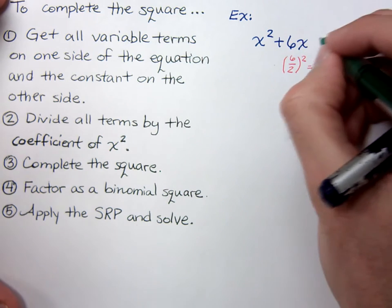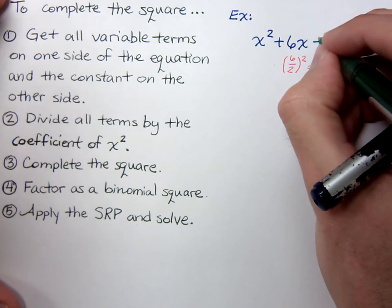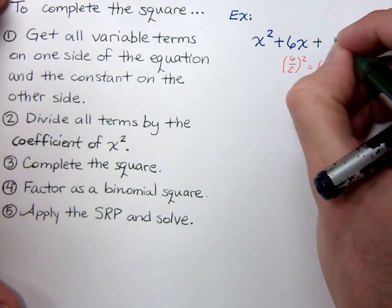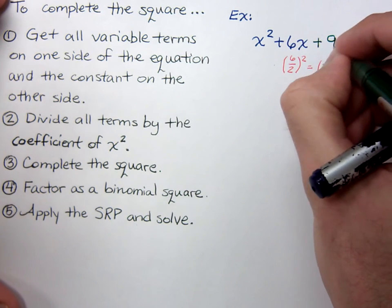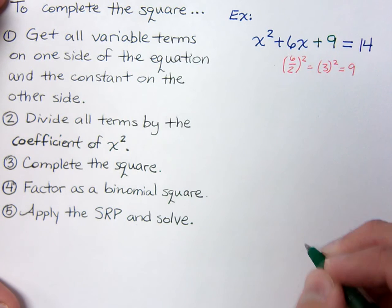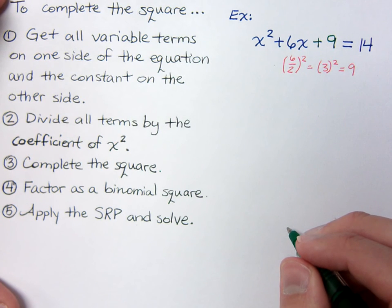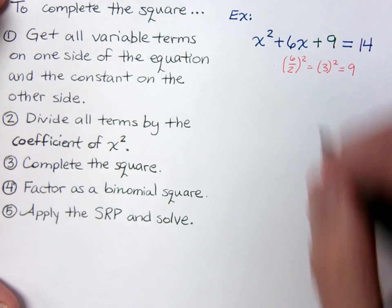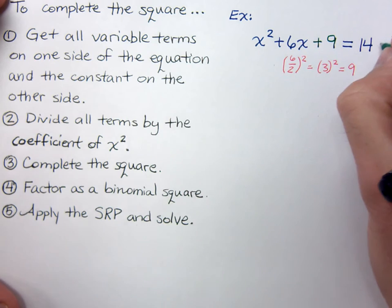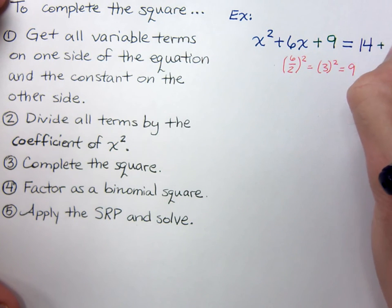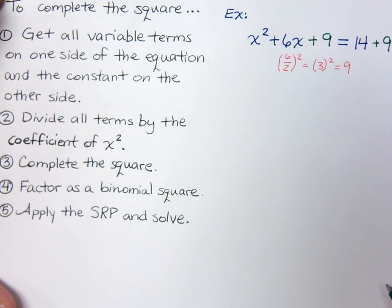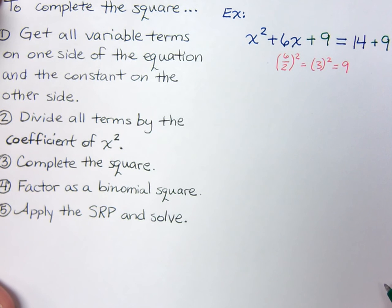That nine is what I need to add to both sides of the equation. I can add nine over here, but as soon as I add nine there, I've altered the balance. What you do to one side of the equation, you have to do to the other side, so I have to add nine to both sides.